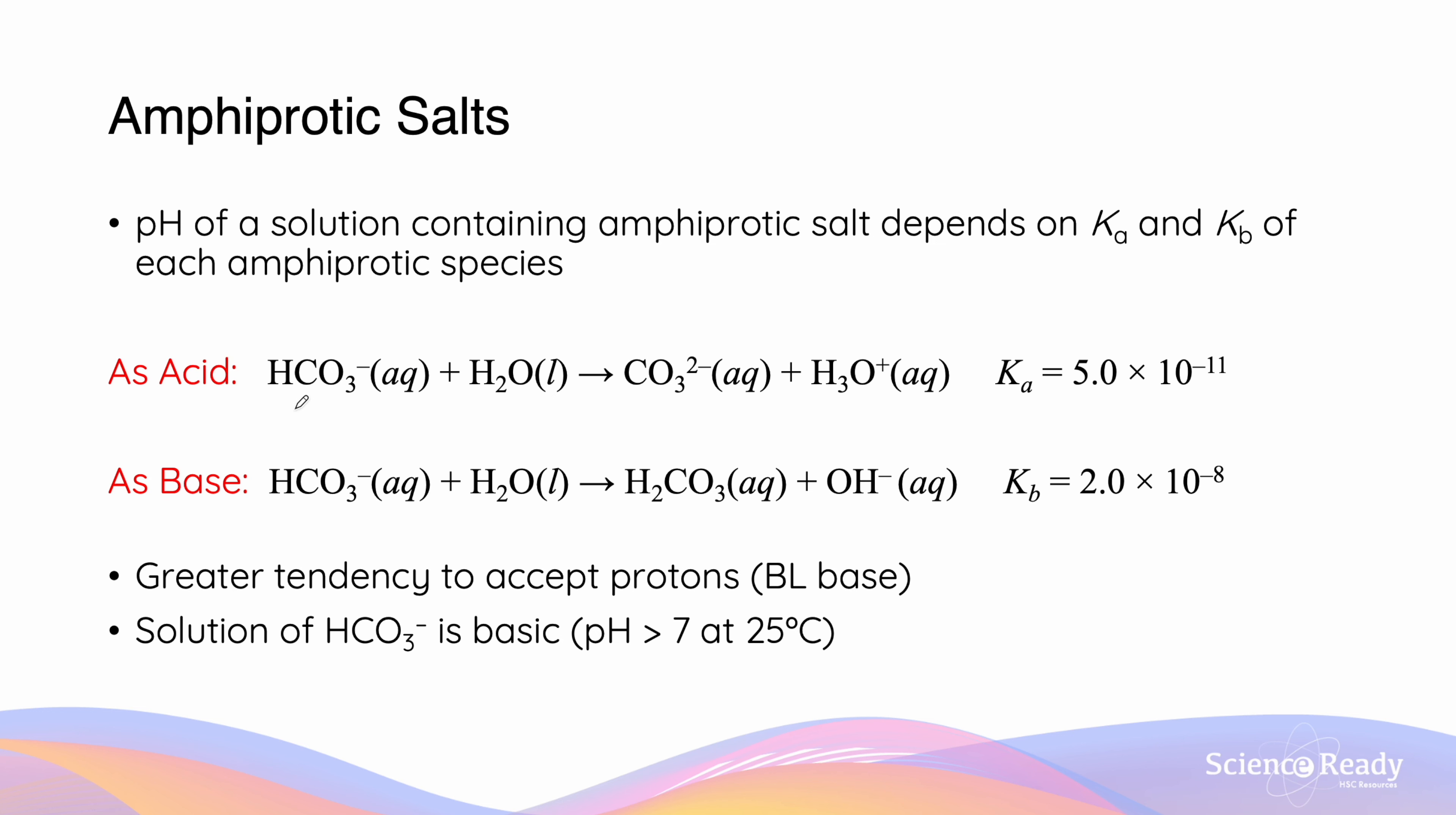If we look at HCO3- hydrogen carbonate, which is formed from the dissociation of the ionic salt NaHCO3, we can see that the Ka value, 5 × 10^-11, is less than the Kb value, 2 × 10^-8. As a result, we know that there's a greater tendency for this to act as a Brønsted-Lowry base to accept protons than to act as a Brønsted-Lowry acid.